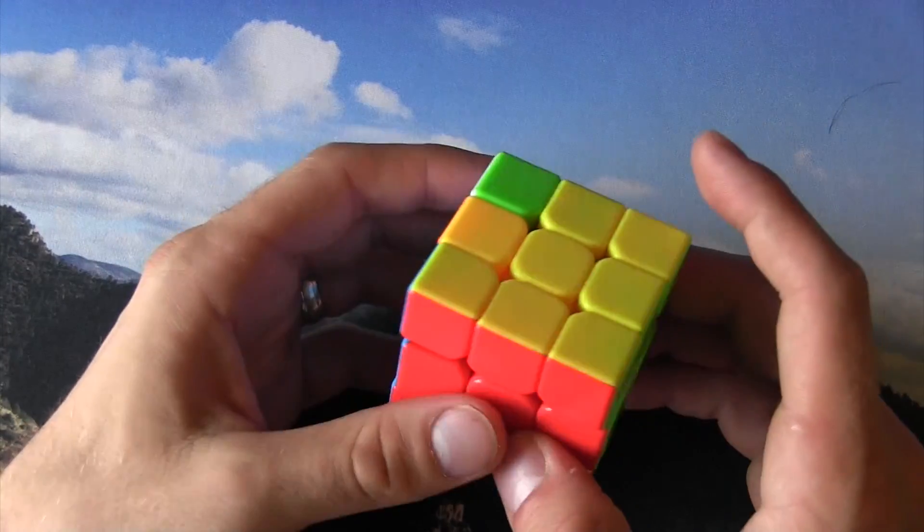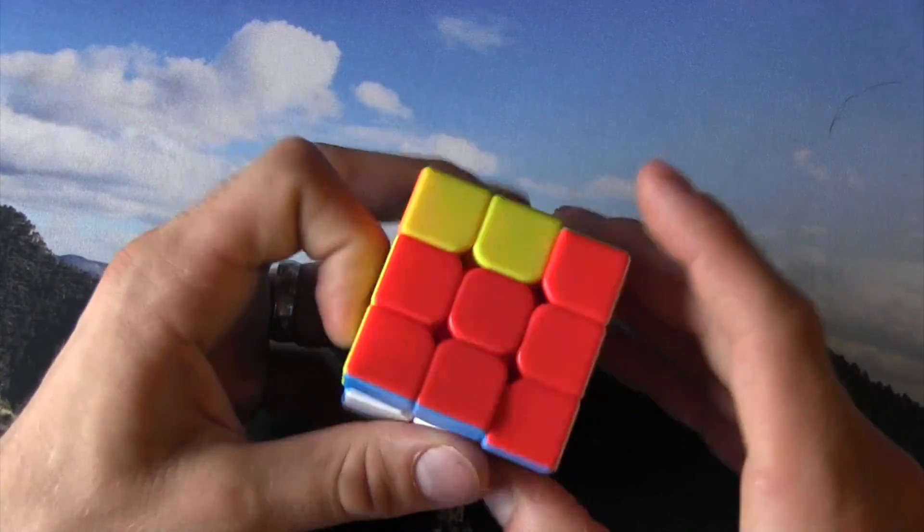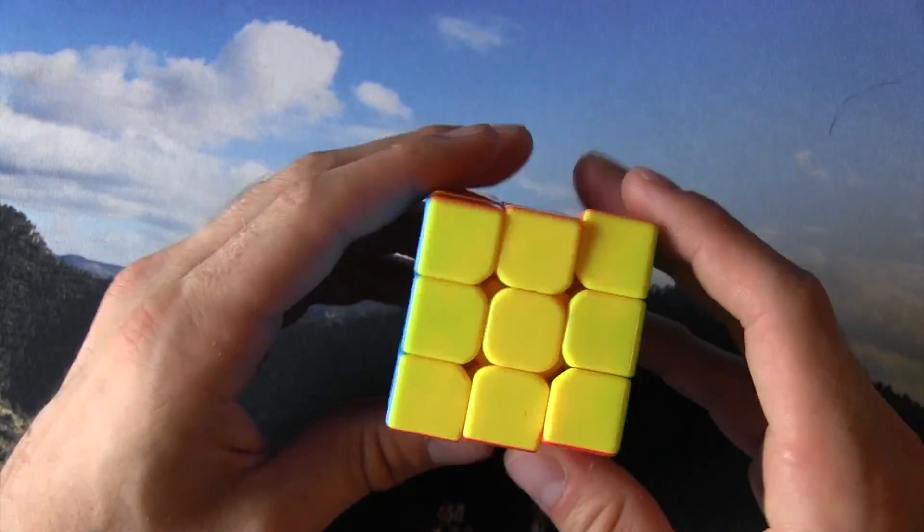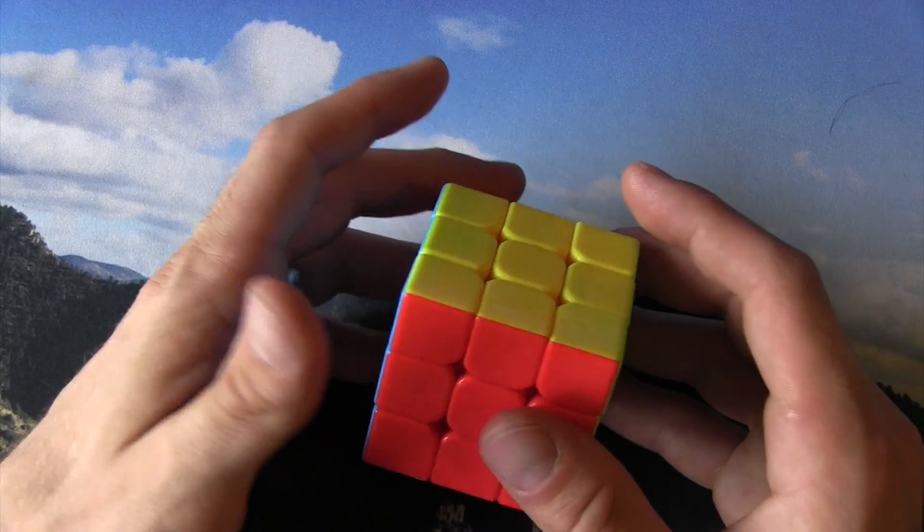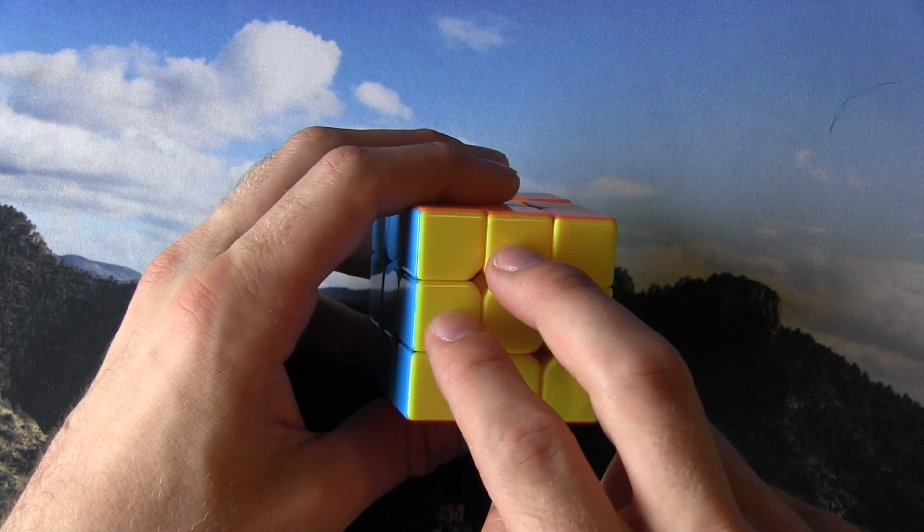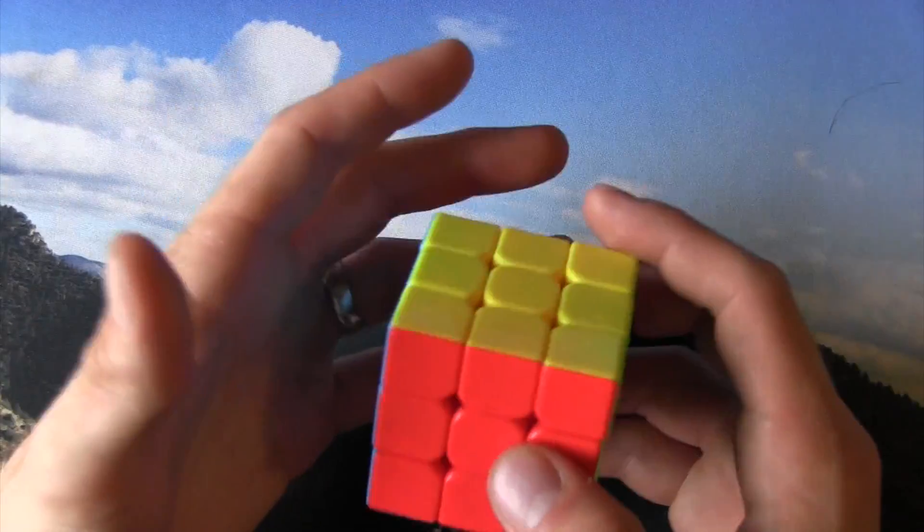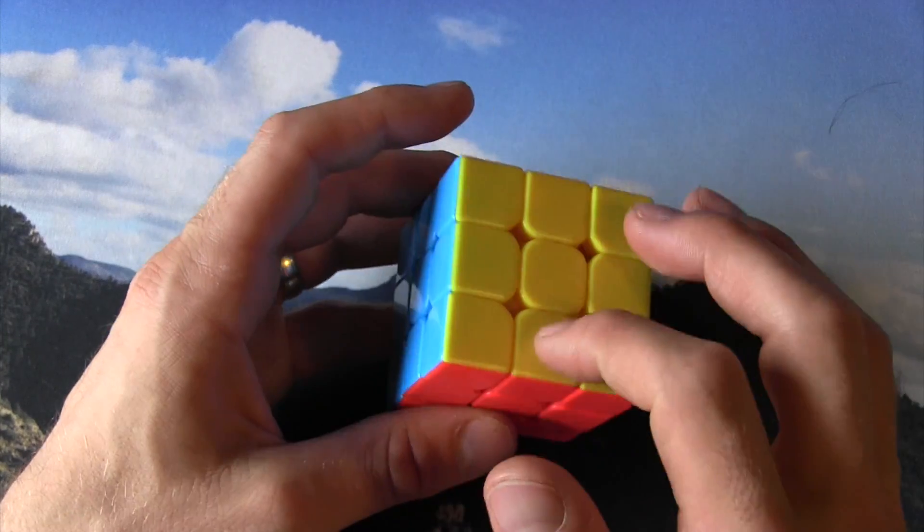Now, if you do an even number of Y permutations or altered Y permutations, then those pieces are going to be back where they need to be when you're done. But let's say there's an odd number of corners. Well, if there's an odd number of corners that need to be moved, these are going to be out of place.